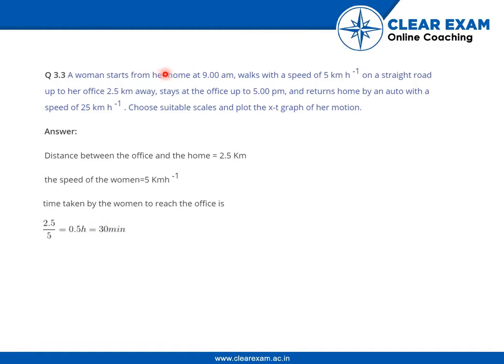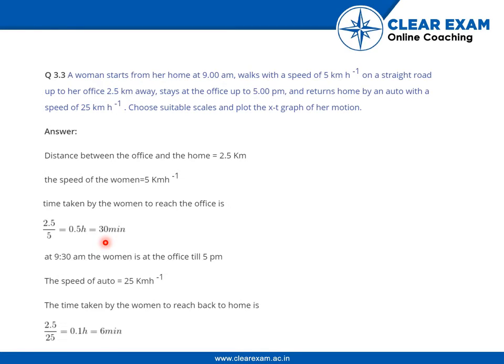If she starts from her home at 9 am, she reaches her office at 9:30. Then she stays at her office up until 5 pm. After that, she returns home by auto, and the speed of the auto is 25 km per hour. The velocity is given, and the distance is the same, which is 2.5 km.